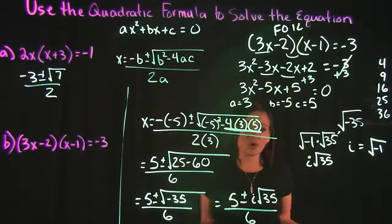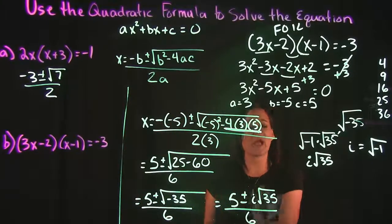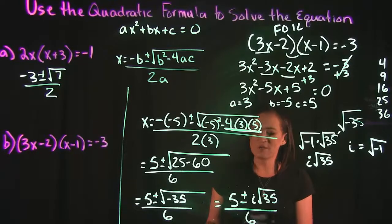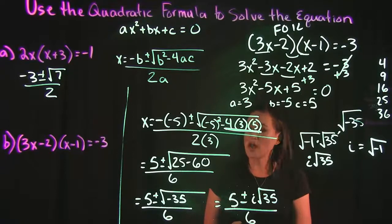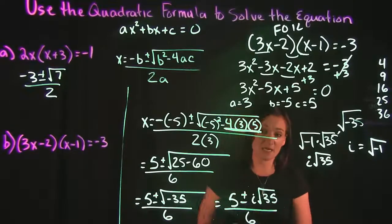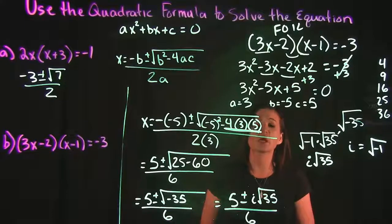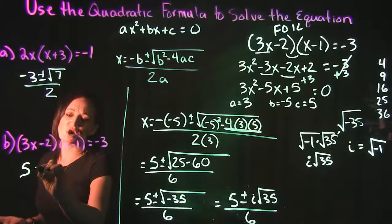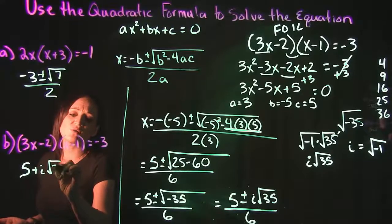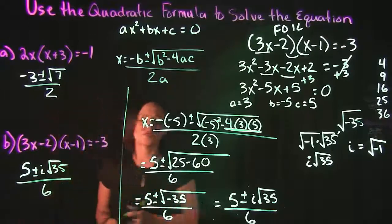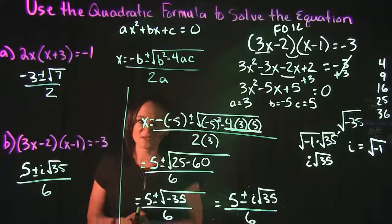Putting that back into the problem, we have 5 plus or minus i square root of 35 over 6. That's all we can do — we can't simplify the radical further, and we don't have a common factor since we have 5, 1, and 6, which share nothing in common. So we are done. Our two solutions are 5 plus i square root of 35 over 6, and 5 minus i square root of 35 over 6.